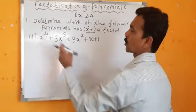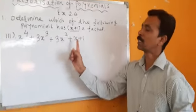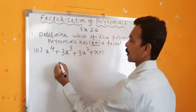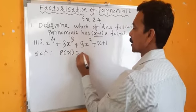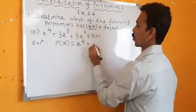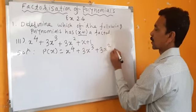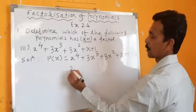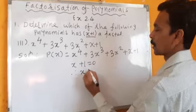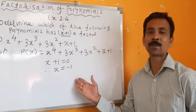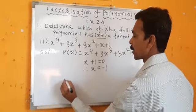Third sum: P of x is equal to x raised to 4 plus 3x cubed plus 3x squared plus x plus 1. x plus 1 equals 0, therefore x equals minus 1. Now I will put minus 1 in P of x.